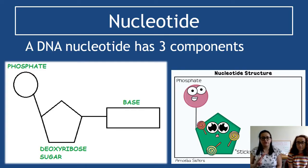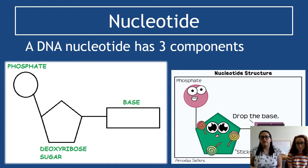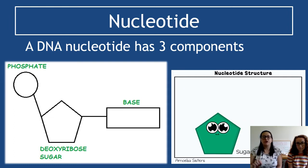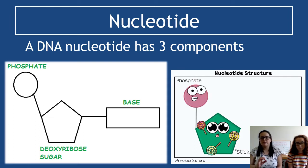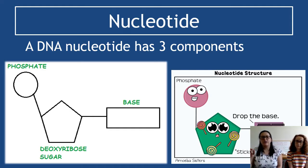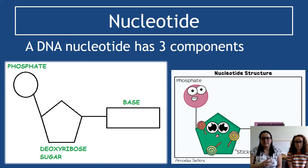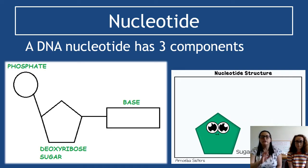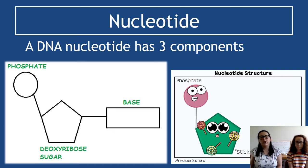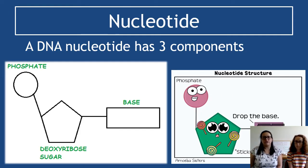A nucleotide has three components you need to be able to name. They have a phosphate and in DNA they have a deoxyribose sugar - that's important because we also look at RNA which has a ribose sugar. The D in DNA is significant, referring to the deoxyribose sugar. So you have your phosphate, your deoxyribose sugar, and your base - which could be adenine, thymine, guanine, or cytosine.